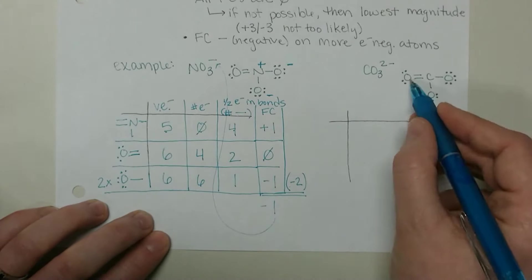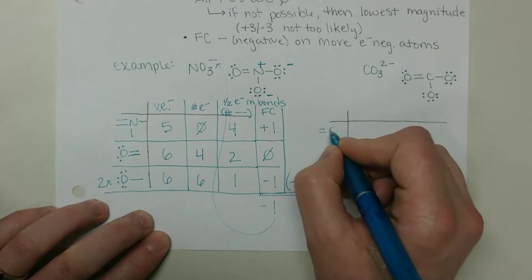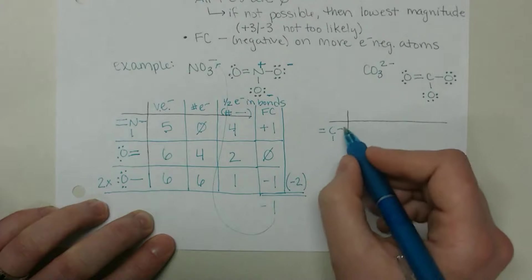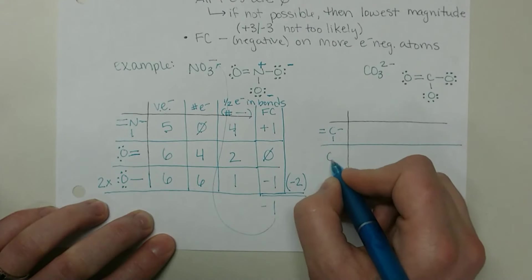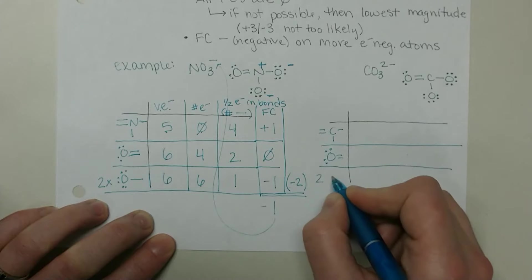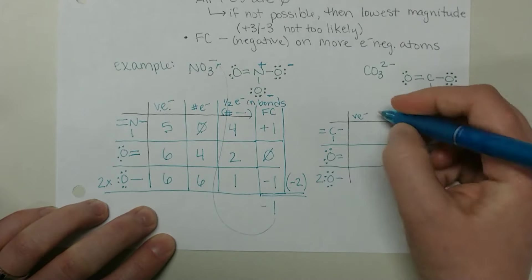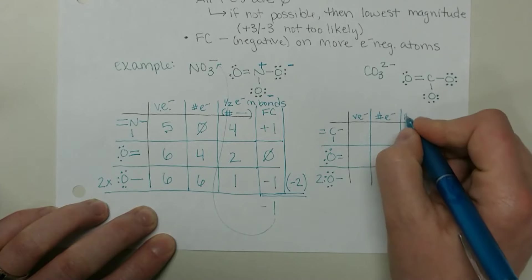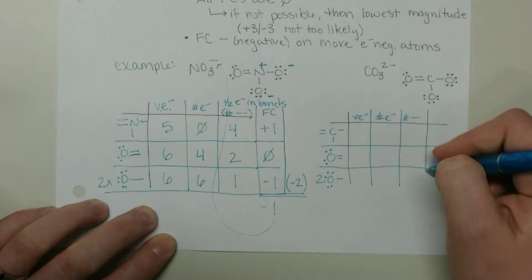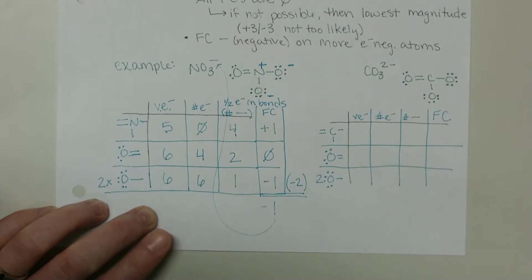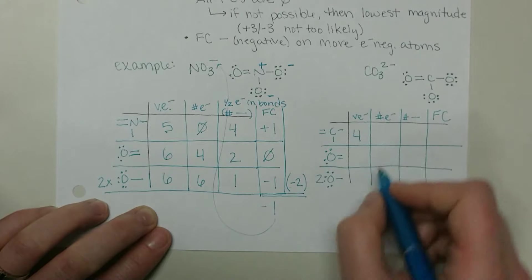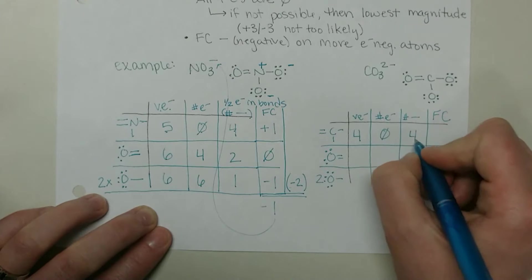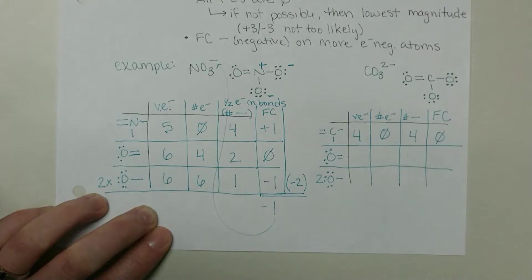We have the same type of bonding. Carbon has the double bond and two single bonds. We have a double bonded oxygen, and we have two single bound oxygens. Valence electrons, number of electrons, number of bonds, and then our formal charge.